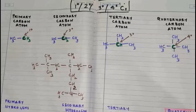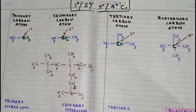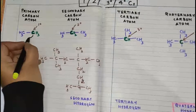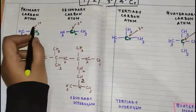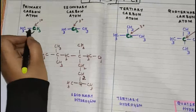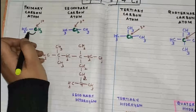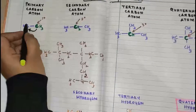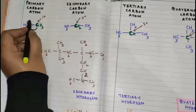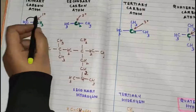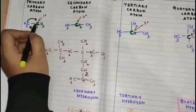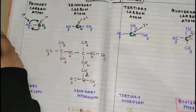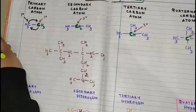Let us start with our topic. First, we are going to discuss what a primary carbon atom is. The carbon atom which is attached to one more carbon atom is called a primary carbon atom. In this structure of ethane, this carbon is attached to one more carbon atom, and this carbon is again attached to one more carbon atom. So in this structure we have two primary carbon atoms.